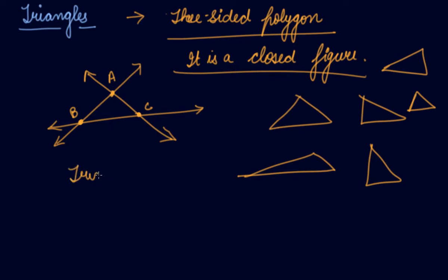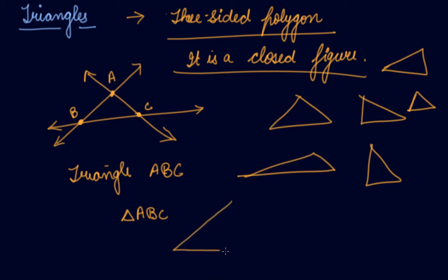It is a triangle A, B, C. Apart from writing the word 'triangle,' you give a sign like this — triangle ABC. If I make this M, N, O, can you write down the name of the triangle? So the triangle is M, N, O.